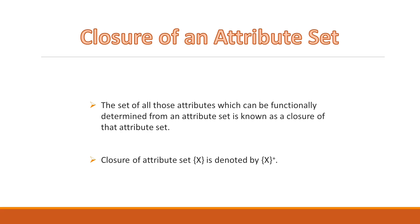First of all, let us see what is the closure of an attribute set. The set of all those attributes which can be functionally determined from an attribute set is known as the closure of that attribute set. The closure of an attribute set, say x, is denoted by x within curly braces with superscript plus.